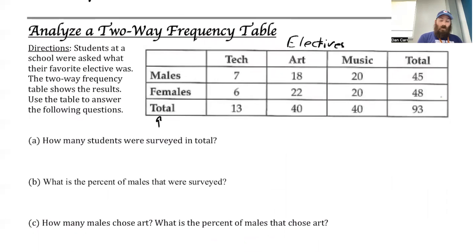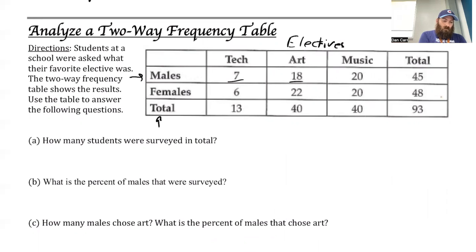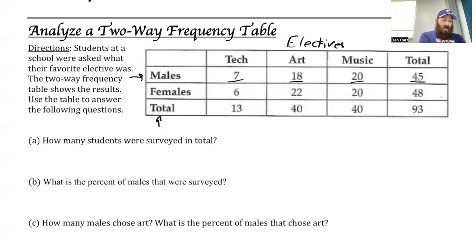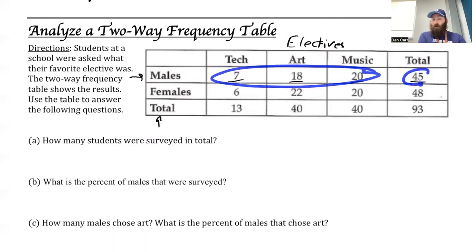So the first thing I want to look at, just to analyze a little bit — what we're saying in this row is that males preferred the tech class. Seven males preferred the tech class, 18 males preferred art, 20 preferred music. Here is the total number of males, and if I add those three numbers together — 7, 18, and 20 — we'll get 45.